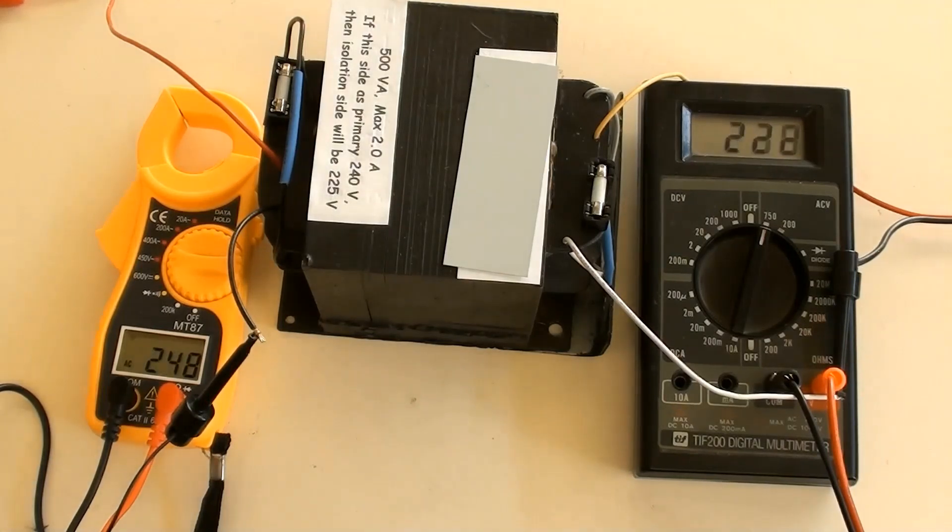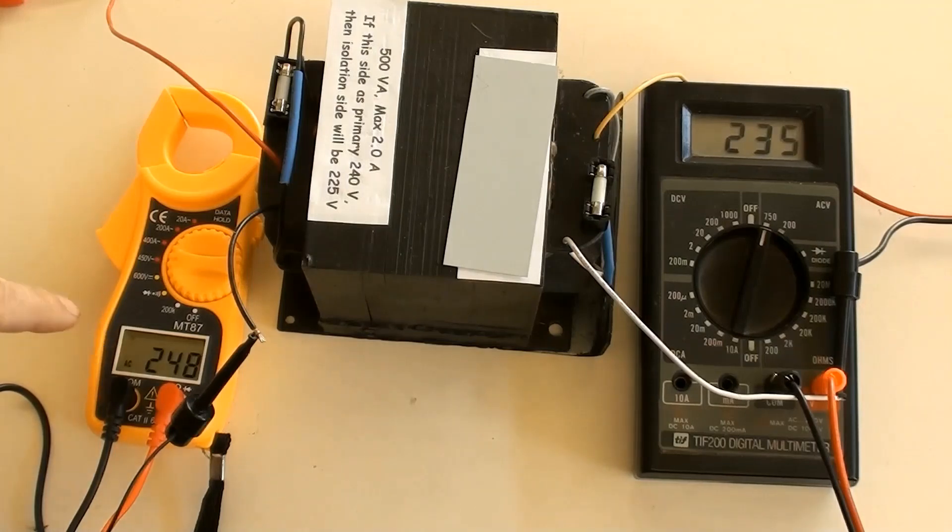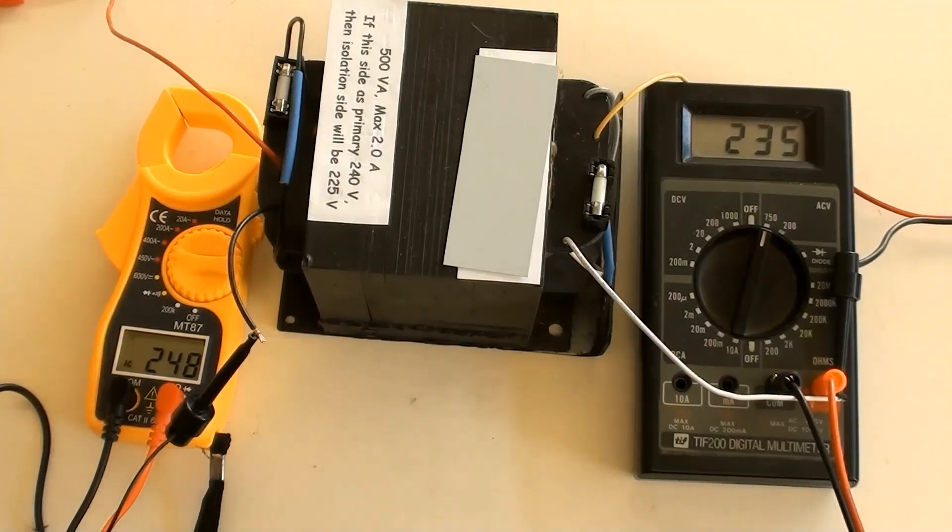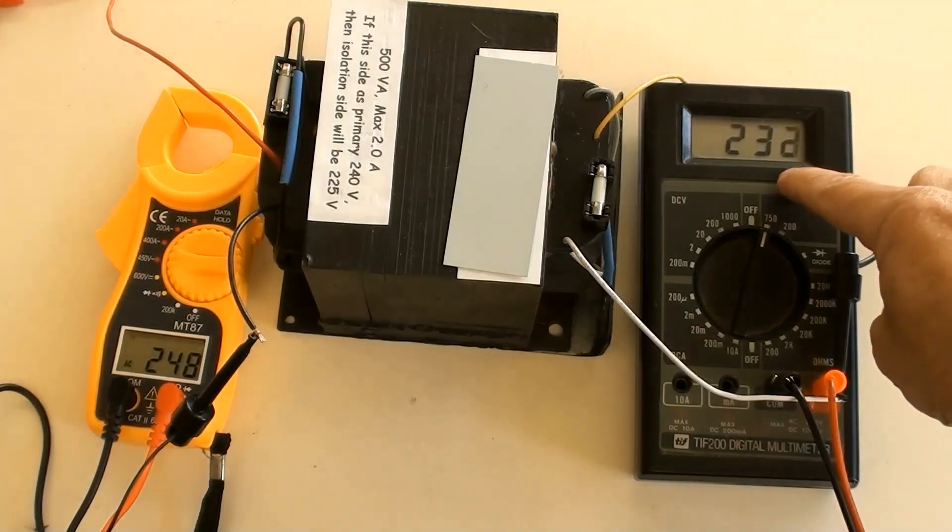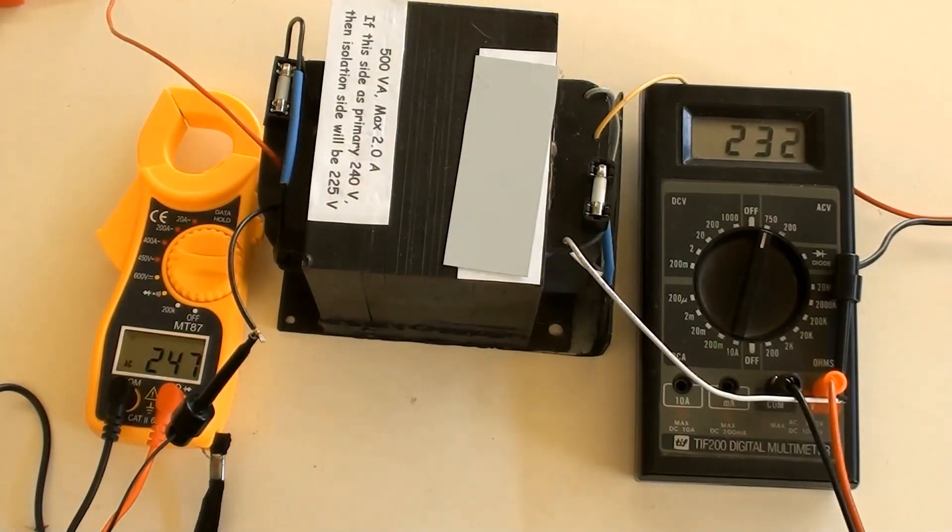Switched live power on. You can see at the moment the voltage of live power is a bit higher than normal of 240 volts, and so is the voltage of the isolation side as it should be.